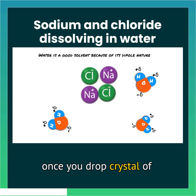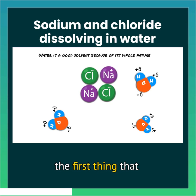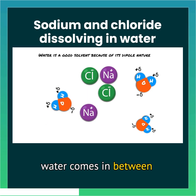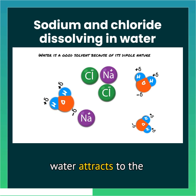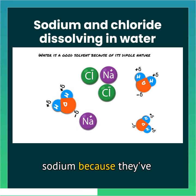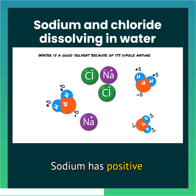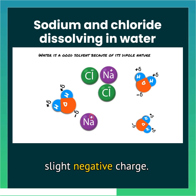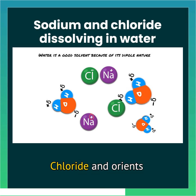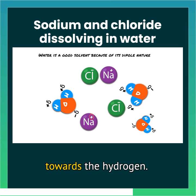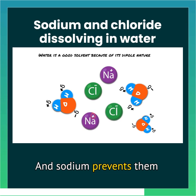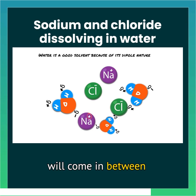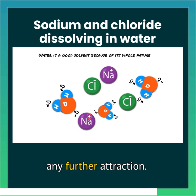Once you drop a crystal of salt into water, the first thing that happens is that the water comes in between those ions of the salt. The oxygen from water attracts to the sodium because they've got opposite charges — sodium has a positive charge, and the oxygen in water has a slight negative charge. The same applies to chloride. Chloride orients towards the hydrogen, and this basically prevents the chloride and sodium from getting attracted to each other, because another water molecule will come in between and prevent any further attraction.